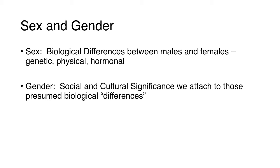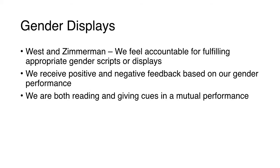Gender is the social and cultural significance that we attach to these presumed biological differences — the meanings we attach to what it is to be a woman or a man and how to appropriately show womanhood or manhood. A lot of what sociology is about is looking at how women and men are expressing themselves as gendered beings.